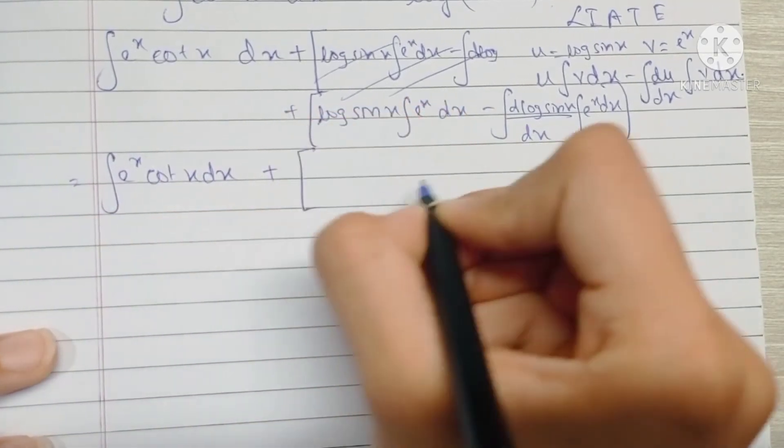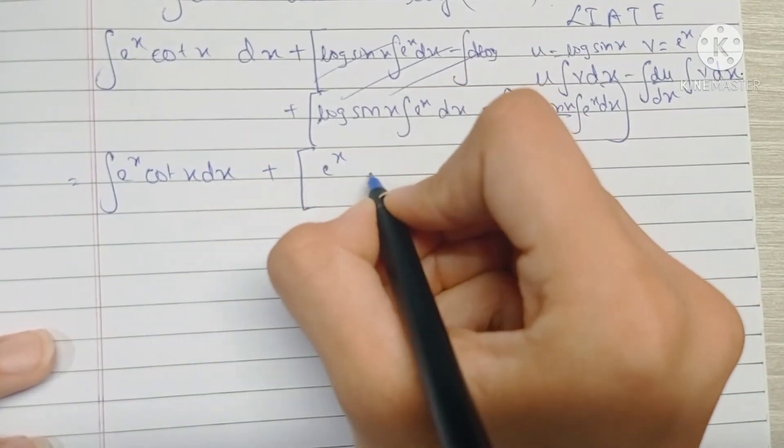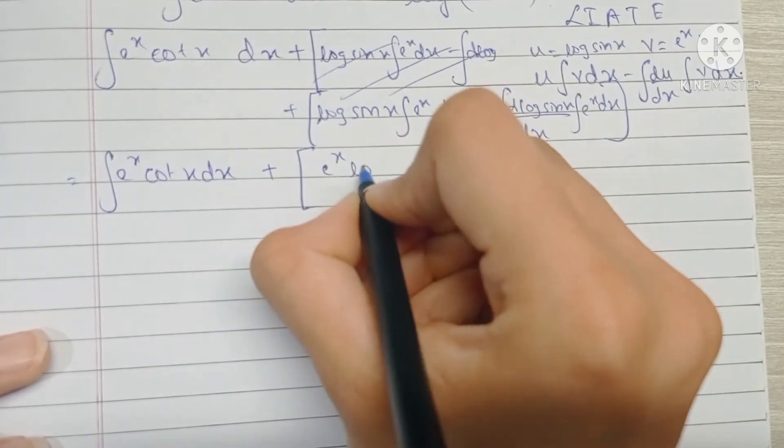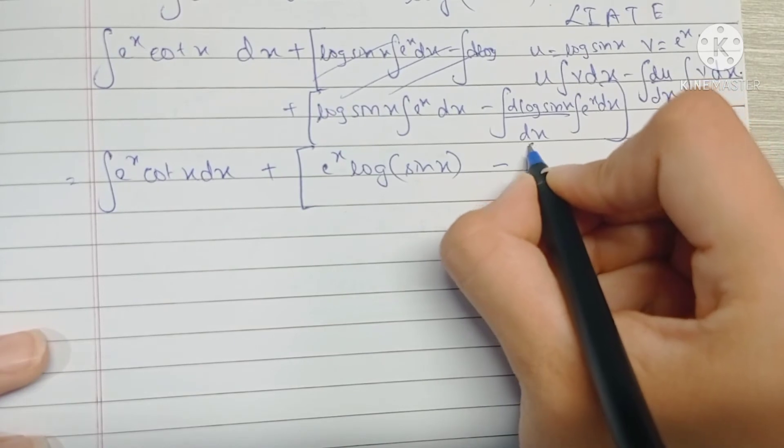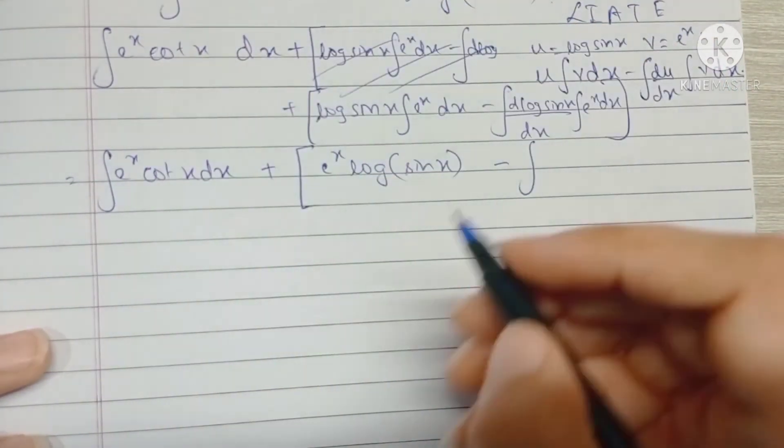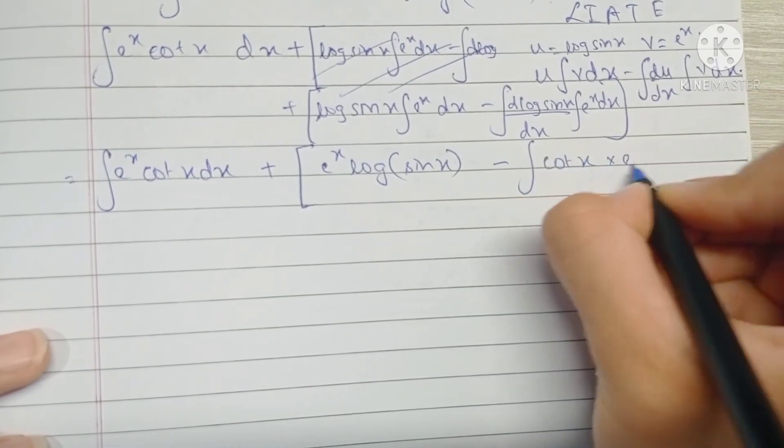Log sin x plus the integral of e raised to x remains as it is, e raised to x, because the coefficient of x is 1. So the integral itself is e raised to x minus the differentiation of log sin x is cot x, because the integral of cot x is log sin x. So this becomes cot x and this becomes e raised to x again.